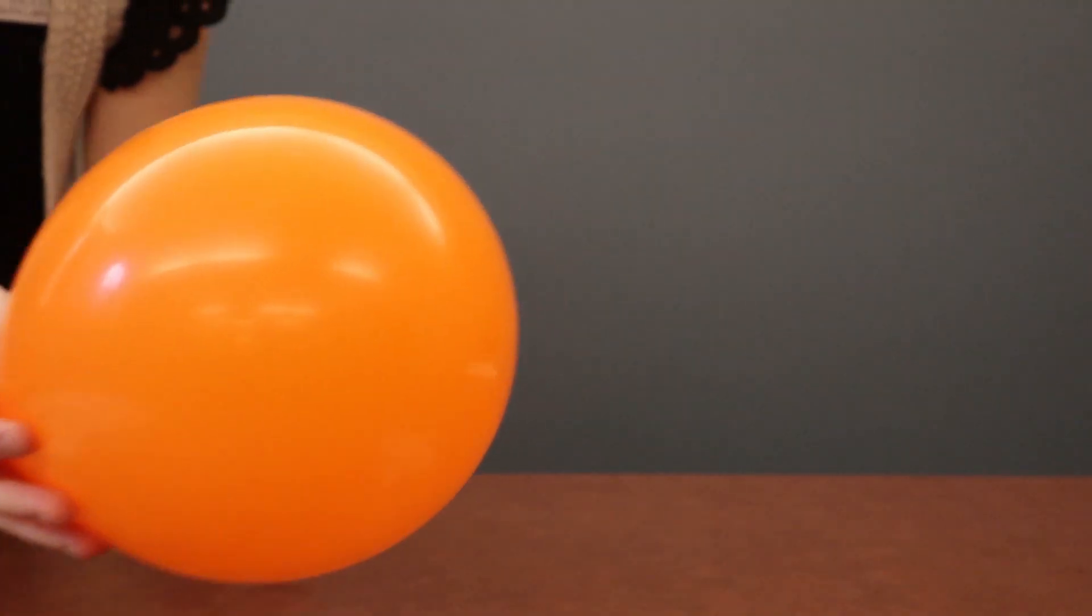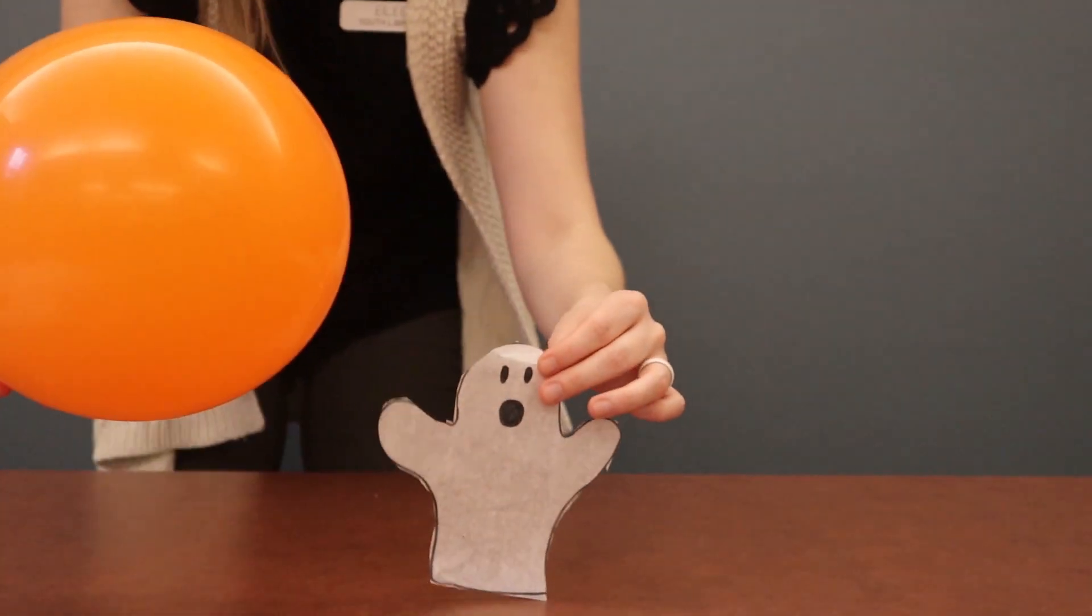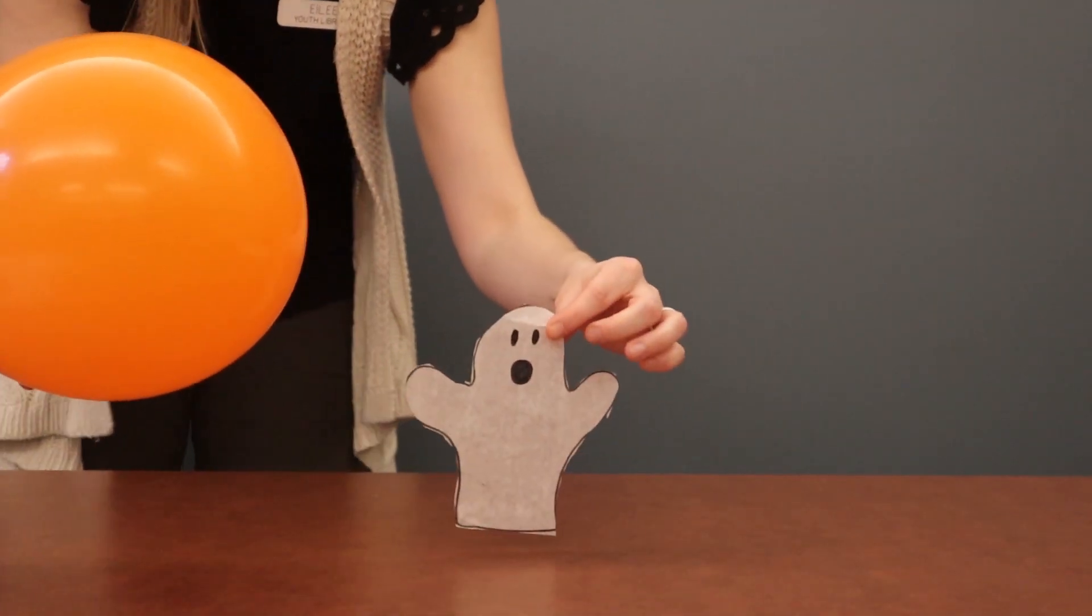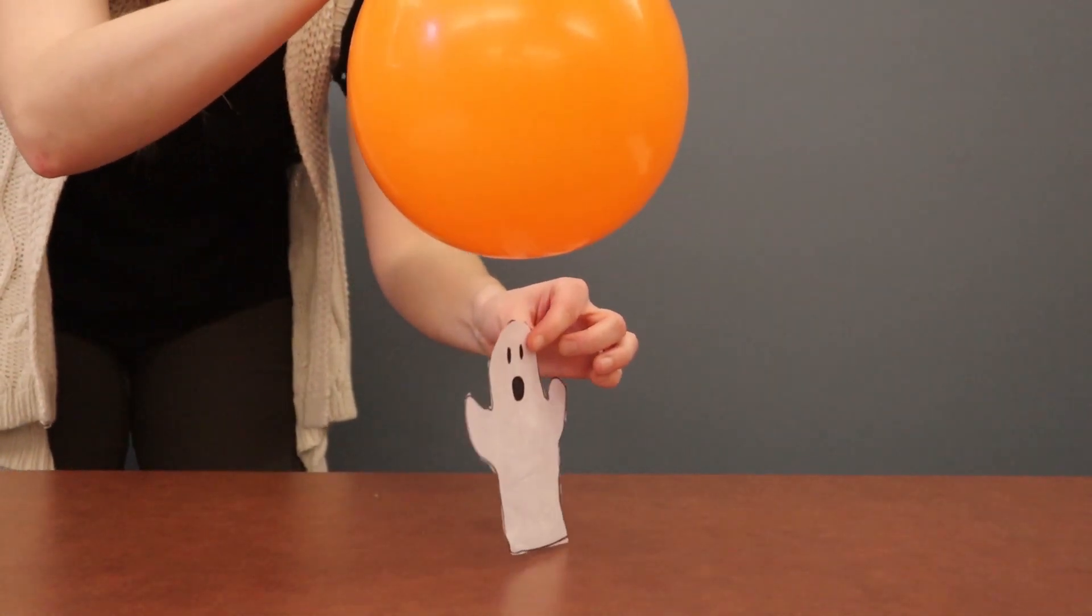I think I've got enough of a charge on my balloon, hopefully. So now we're going to try to get our ghost to dance. So I've got my balloon that's nice and charged up. And here's my tissue paper ghost. And what I'm going to do is I'm going to kind of hold up my ghost a little bit and we're going to hold the balloon over him.